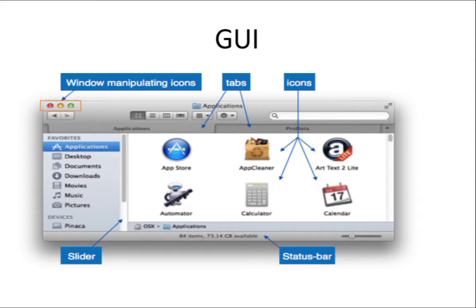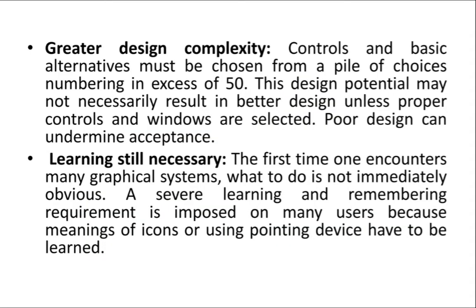To use a GUI you need a pointing device such as a mouse. GUI has some advantages — if you want to know more, the video for that is also in the description. But in this video I'm explaining the disadvantages of graphical user interface.